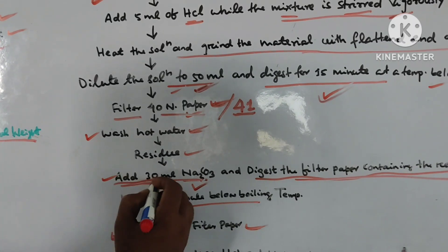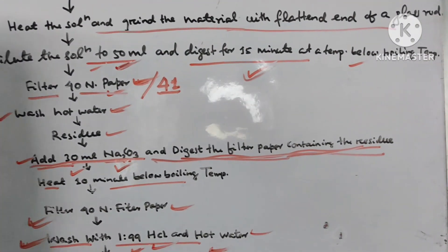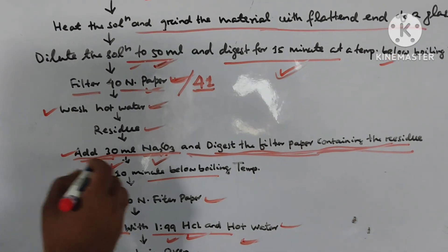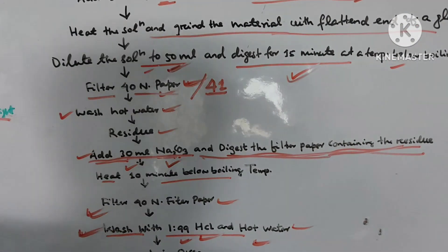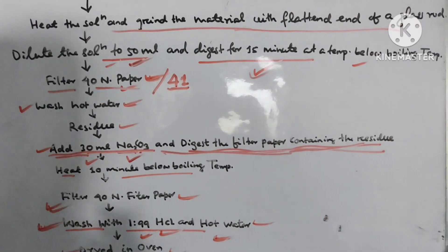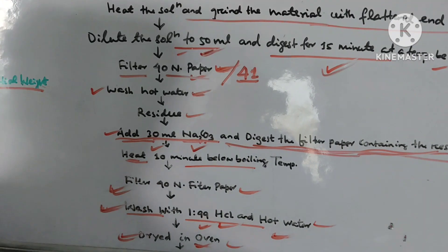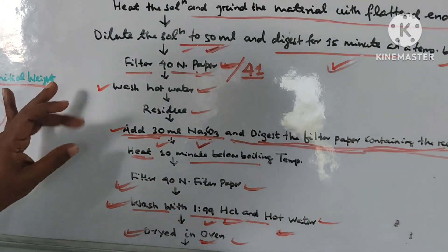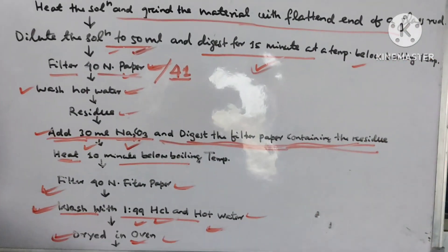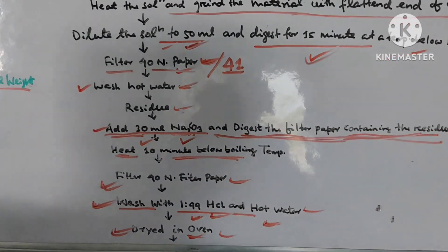Wash with hot water and collect the residue part in another beaker. Add 30 ml of sodium carbonate and digest the filter paper containing the residue. Collect the residue part, transfer it to another beaker, add 30 ml of sodium carbonate, and heat it for 10 minutes below boiling temperature.